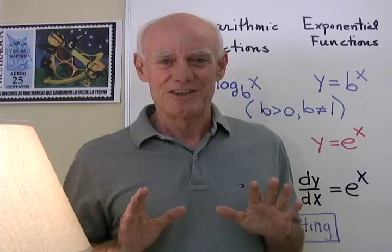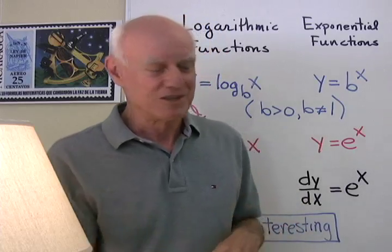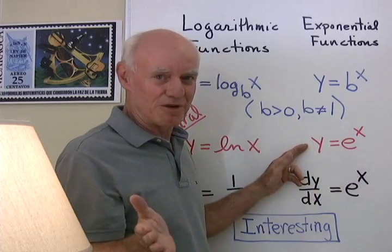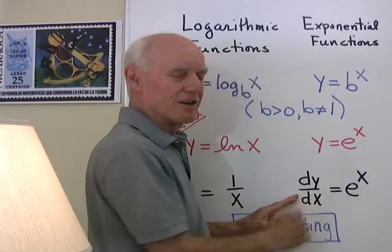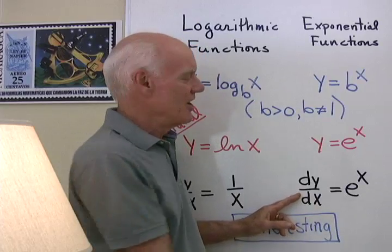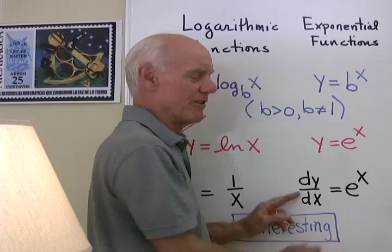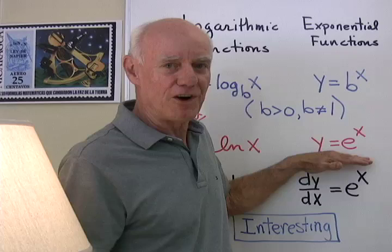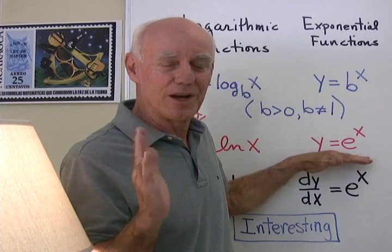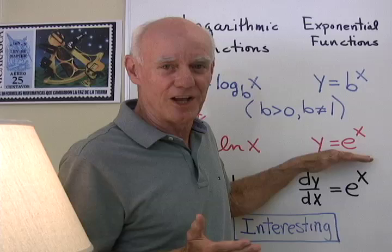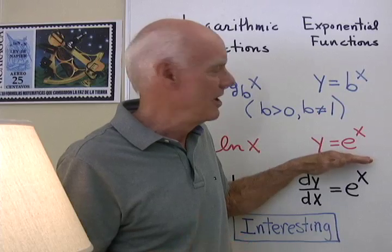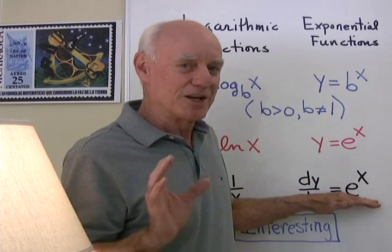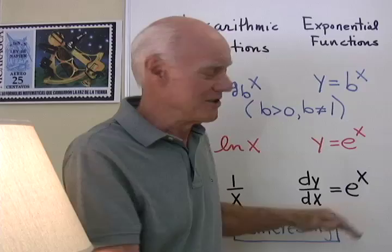Now what's really interesting about these two functions is their derivatives. The derivative of y equal e to the x as you'll see as we progress through this chapter is the function itself e to the x. So this function and its derivative are the same thing, meaning that every point on the graph of this function, the y-coordinate of that point happens to also be the slope of the line tangent to the curve at that point. So this function is its own derivative. Very interesting and makes all kinds of things possible because of that.